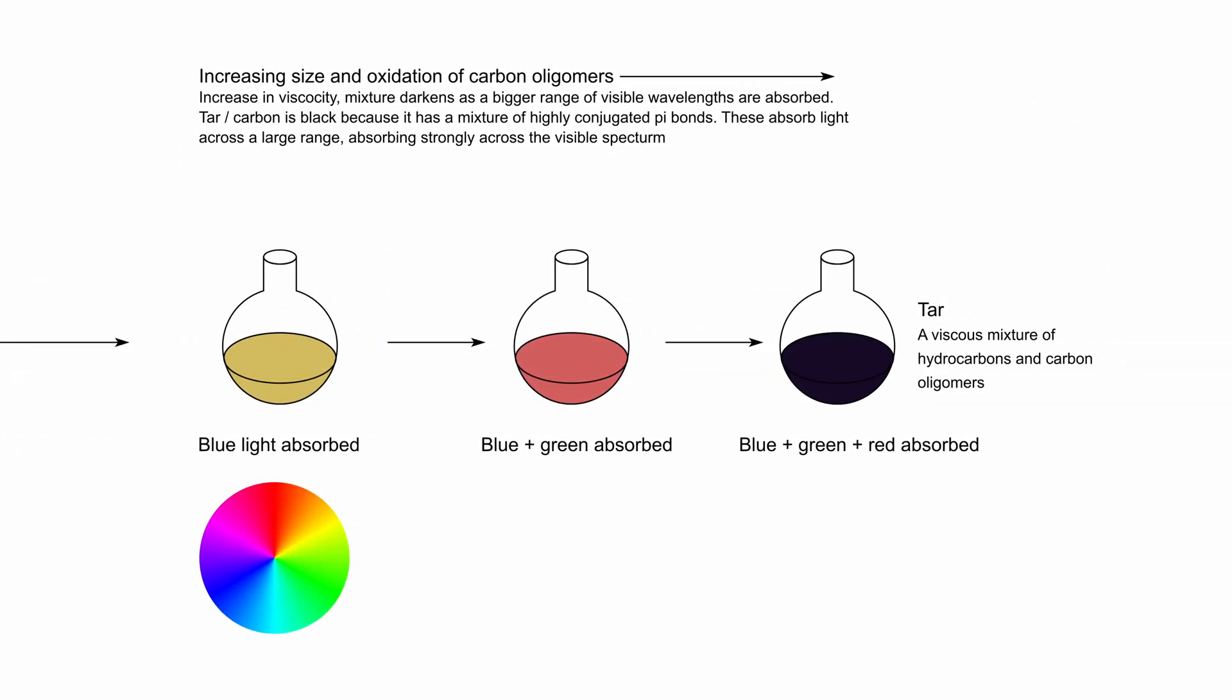If we look here we can see this process causes a color change. As the molecules get bigger and more oxidized the reaction mixture gets darker and moves towards red. The color change happens because at first smaller molecules with fewer double bonds will absorb higher frequency light in the visible spectrum, blue light. If we look at our color wheel the complementary color is yellow. So we start off with yellow then as the molecules get bigger they will start absorbing across blue and green giving us the complementary color red. And finally when we have a big mixture of varying size molecules we will get absorbance across the entire spectrum giving us effectively black tar.